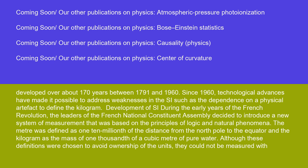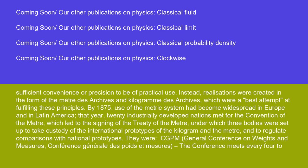The meter was defined as one ten-millionth of the distance from the North Pole to the equator, and the kilogram as the mass of one-thousandth of a cubic meter of pure water. Although these definitions were chosen to avoid ownership of the units, they could not be measured with sufficient convenience or precision to be of practical use. Instead, realizations were created in the form of the metre des archives and kilogramme des archives, which were a best attempt at fulfilling these principles.